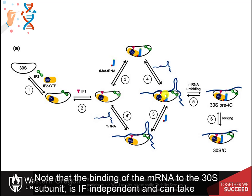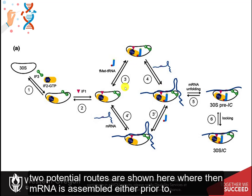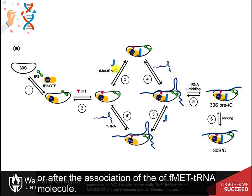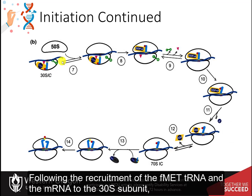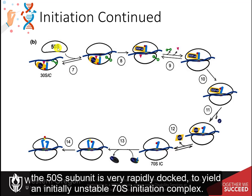Recruitment of the tRNA fMet can also stabilize interactions with the messenger RNA by forming hydrogen bonds between the codon and the anticodon. Note that the binding of the messenger RNA to the 30S subunit is IF-independent and can take place at any time during the 30S assembly process. Two potential routes are shown here, where the messenger RNA is assembled either prior to or after the association of the fMet tRNA molecule. Following the recruitment of the fMet tRNA and the messenger RNA to the 30S subunit loaded with IF2, IF3, and IF1, the 50S subunit is very rapidly docked to yield an initially unstable 70S initiation complex.